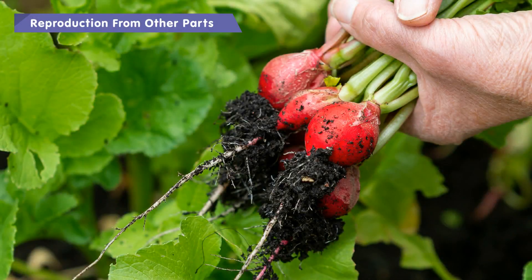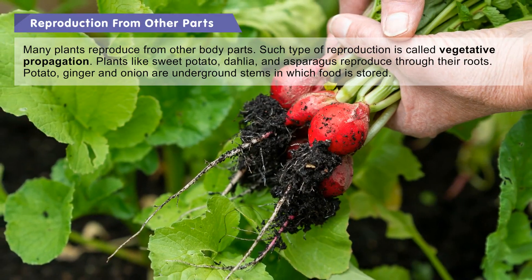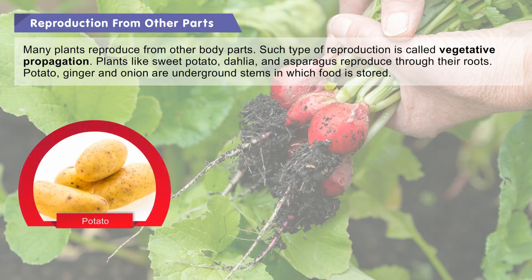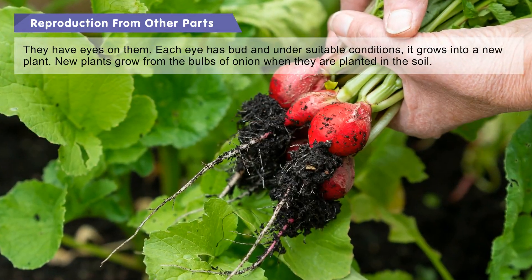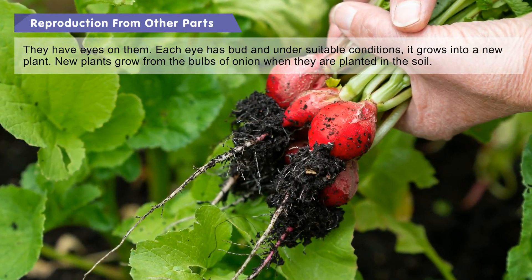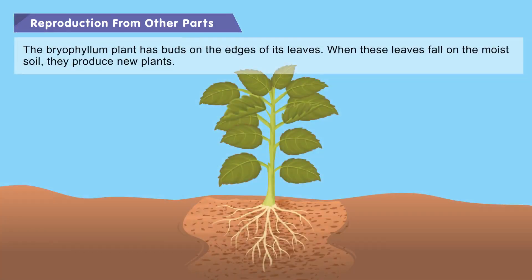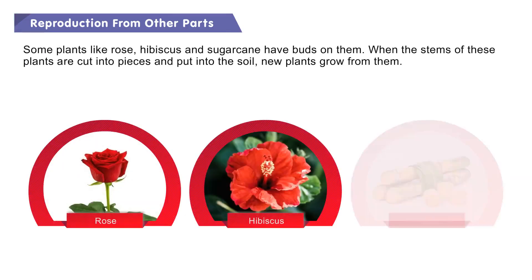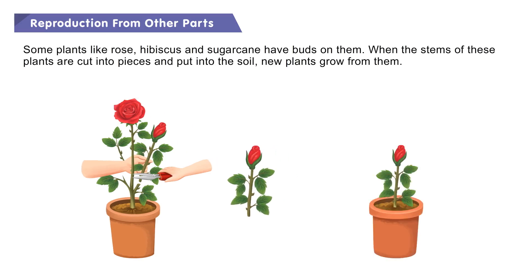Reproduction from other parts: Many plants reproduce from other body parts, a process called vegetative propagation. Plants like sweet potato, dahlia, and asparagus reproduce through their roots. Potato, ginger, and onion are underground stems in which food is stored. They have eyes on them, and each eye has a bud that under suitable conditions grows into a new plant. New plants also grow from the bulbs of onion when planted in soil. The bryophyllum plant has buds on the edges of its leaves — when these leaves fall on moist soil, they produce new plants. Some plants like rose, hibiscus, and sugarcane have buds on their stems; when stems are cut into pieces and put into soil, new plants grow from them.